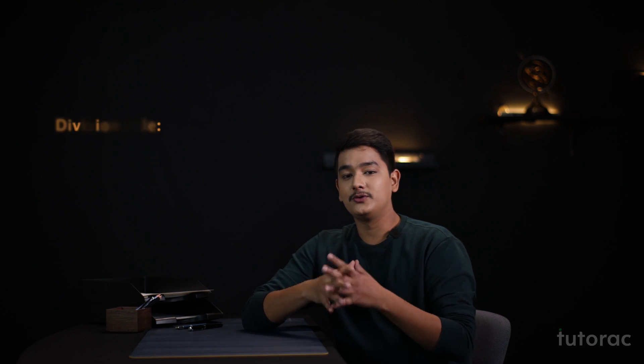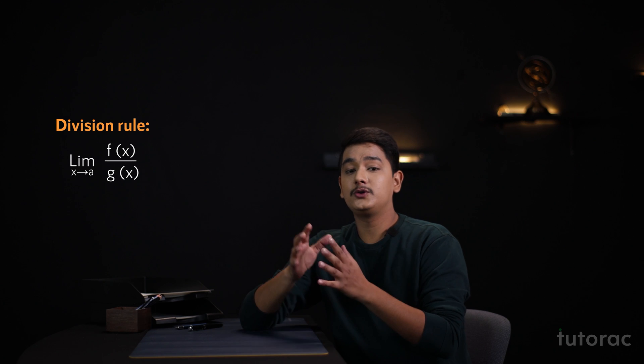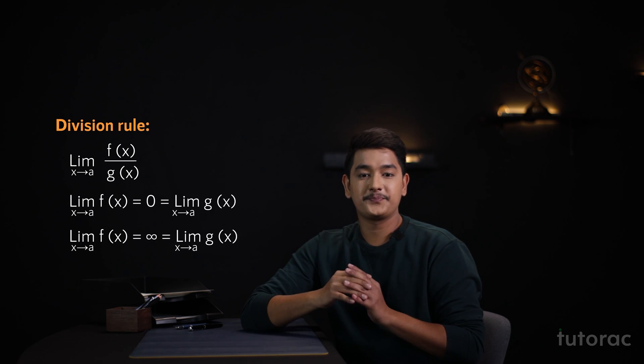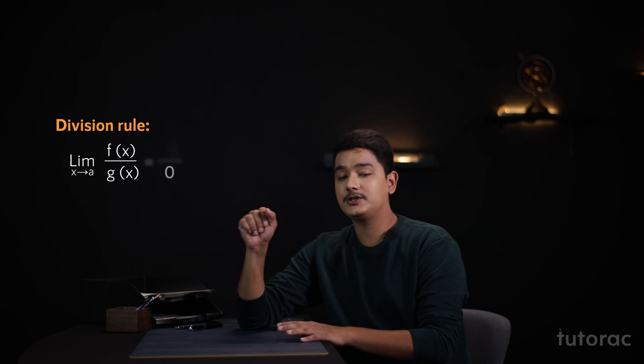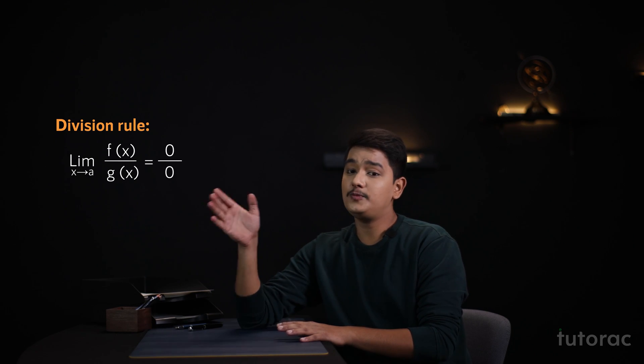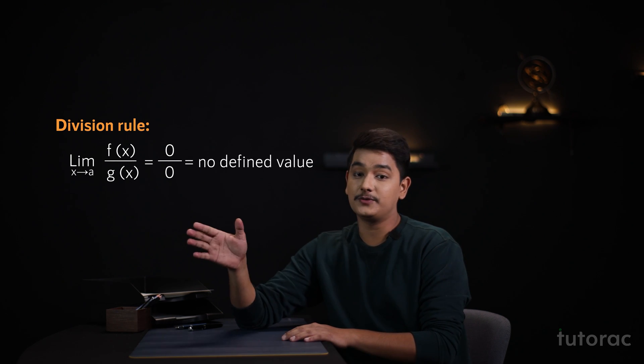Now, let's talk about the division rule. Here two functions are approaching to either 0 or infinity. Let's talk about the first case where both the functions are approaching to 0. We will get 0 by 0 and we cannot get any defined value for the expression 0 by 0.